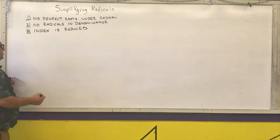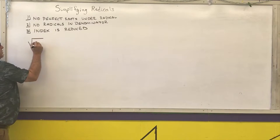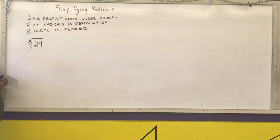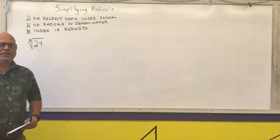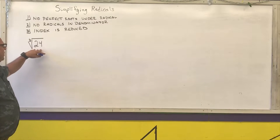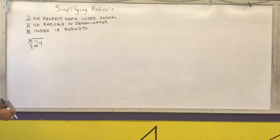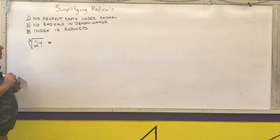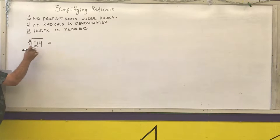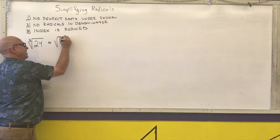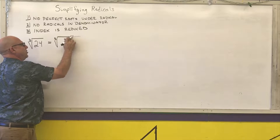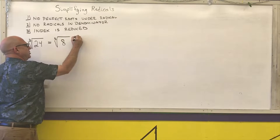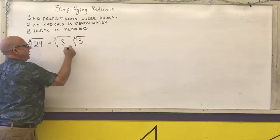I'm going to do some examples and show you how to do these. The first example is the cube root of 24. I want to simplify this. If you remember back to the fundamental theorem of arithmetic, I can write any number as a product of prime numbers raised to powers. The cube root of 24 is the same thing as the cube root of 8 times the cube root of 3, since 8 times 3 is 24.